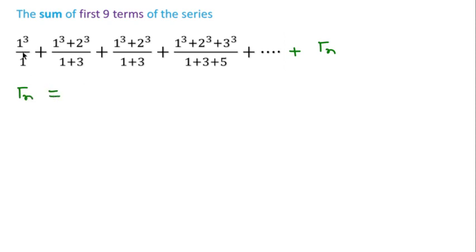In the numerator of each term is the sum of cubes: one cube plus two cube plus three cube. Let's suppose this is n cube. And the denominator part is the sum of odd numbers in each term.